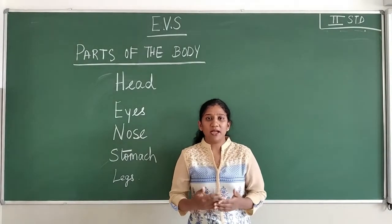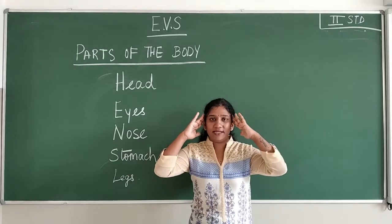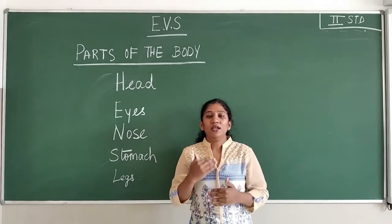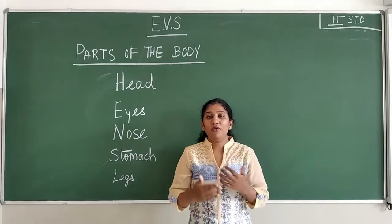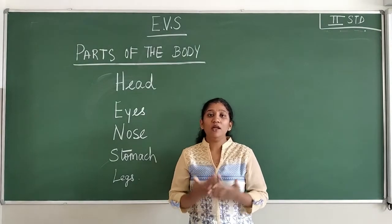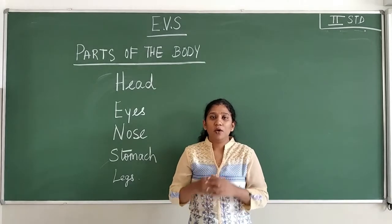Now the first part is head. This is called as head. In the head we have different body parts, that is eyes. We have two eyes. With the help of eyes we are able to see the objects or the other things.